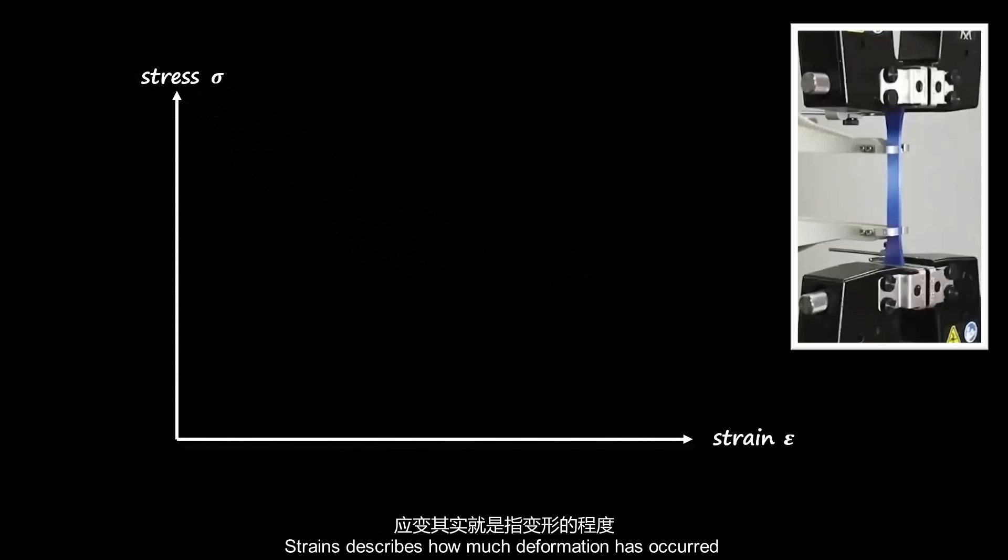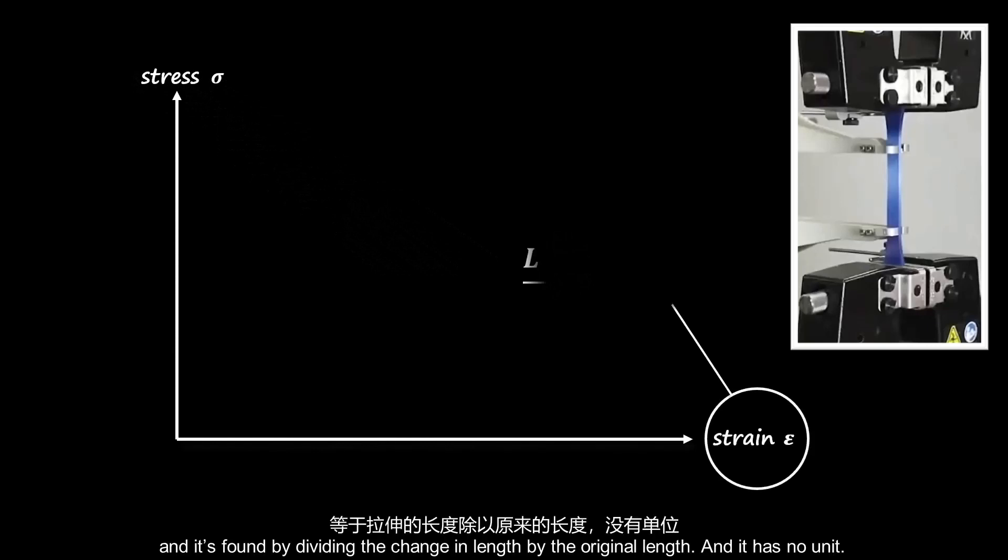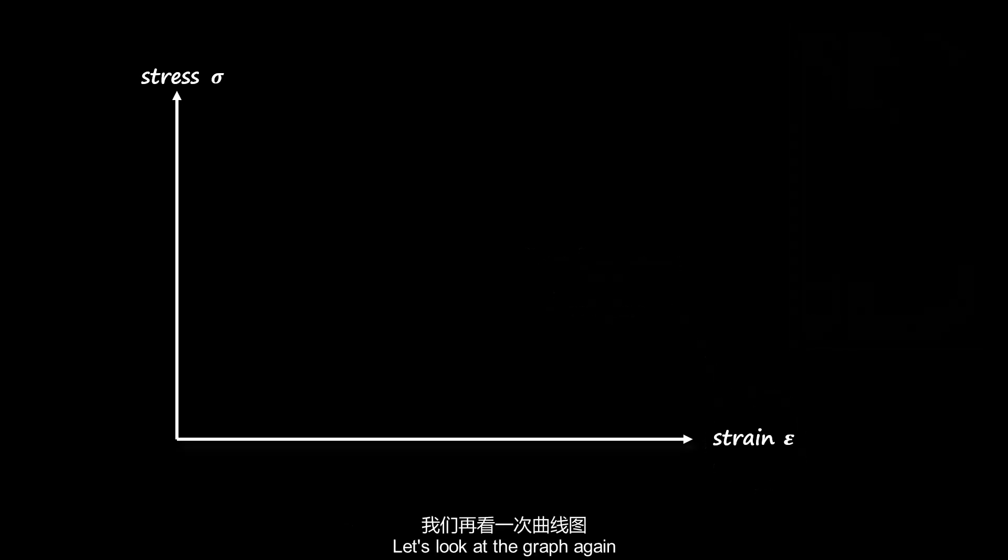Strain describes how much deformation has occurred and is found by dividing the change in length by the original length, and it has no unit. Let's look at the graph again.